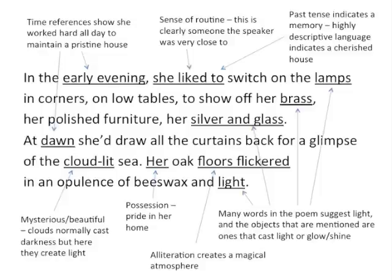Let's have a look at the poem itself. We've got these time references — early evening and dawn — giving a sense that the mother worked hard all day to maintain a pristine house. That idea of hard work and domestic routine is carried on throughout the entire poem. The phrase 'she liked to switch on the lamps' gives it that sense of routine, and the past tense indicates a memory. The highly descriptive language throughout indicates a cherished house. Many words suggest light, and the objects mentioned either cast light, like the lamps, or they glow or shine, like the brass, silver and glass — suggesting the mother looked after her possessions and was very proud of them.